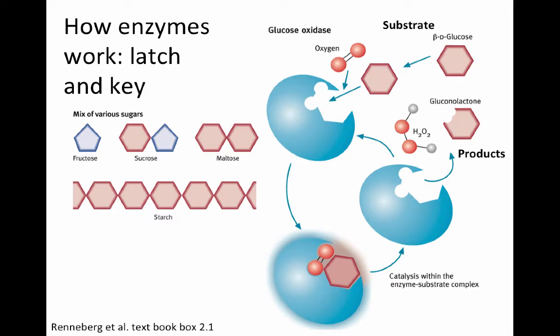The way we typically describe how enzymes work is a lock and key structure. Here in blue you can see our enzyme — the protein folded into a shape — and we have an oxygen molecule and a glucose molecule that fit into this shape like a lock and key. As these substrates fit into the protein, the enzyme folds around them, forcing the molecules to come together, changing their shape, bringing them into a tighter space, and then releasing the products of the reaction.